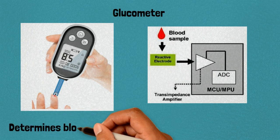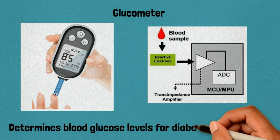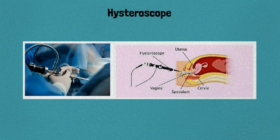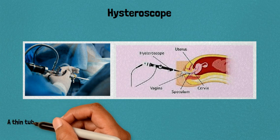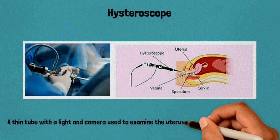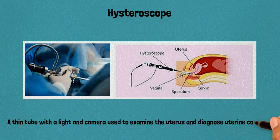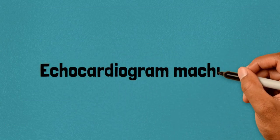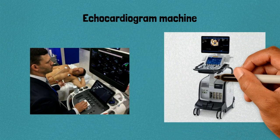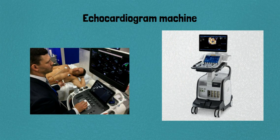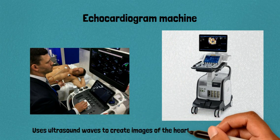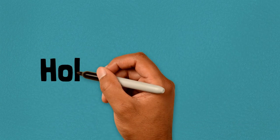11. Pulse oximeter: measures oxygen saturation levels in the blood. 12. Glucometer: determines blood glucose levels for diabetes management. 13. Hysteroscope: a thin tube with a light and camera used to examine the uterus and diagnose uterine conditions. 14. Echocardiogram machine: uses ultrasound waves to create images of the heart's structure and function.